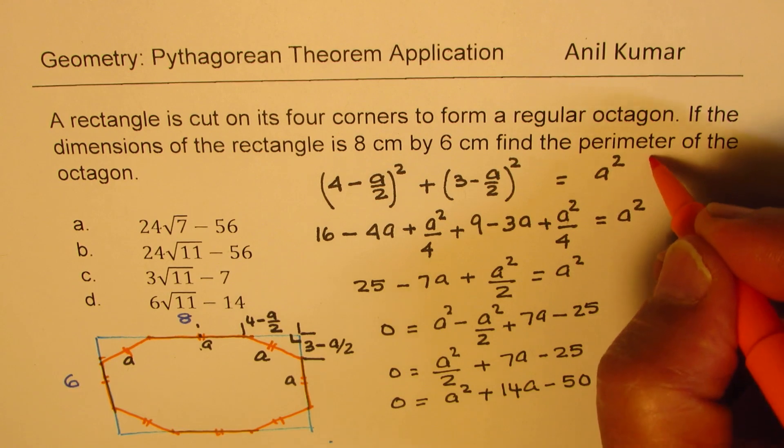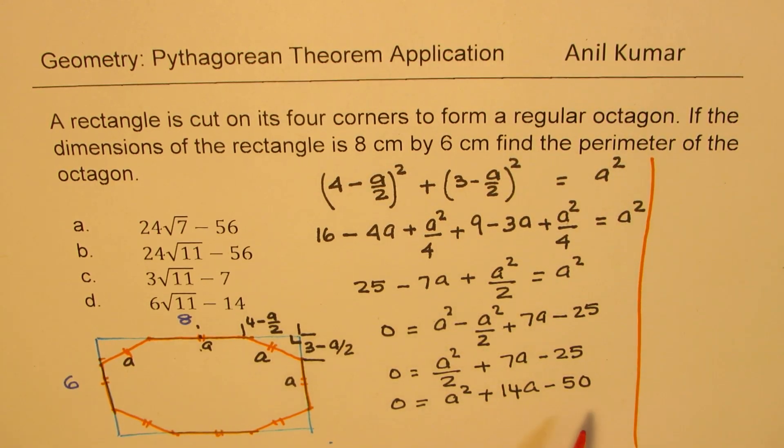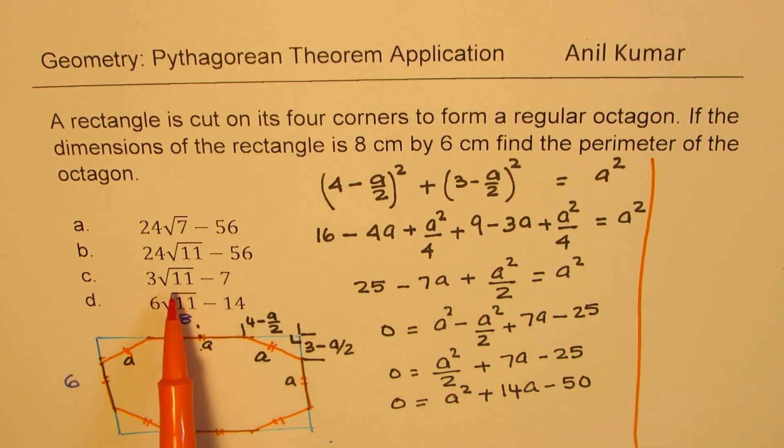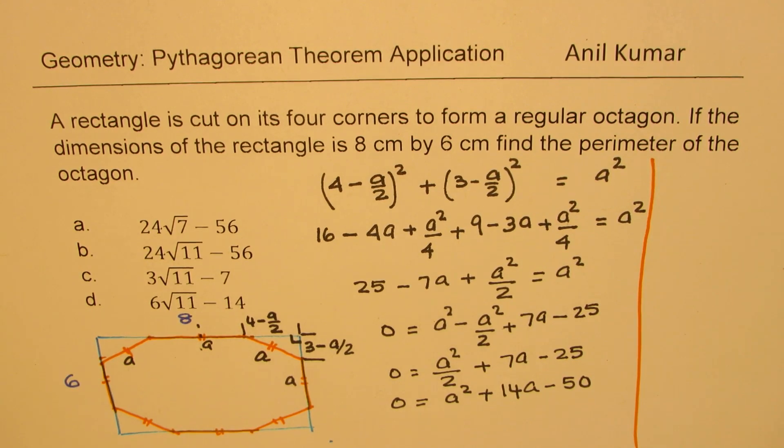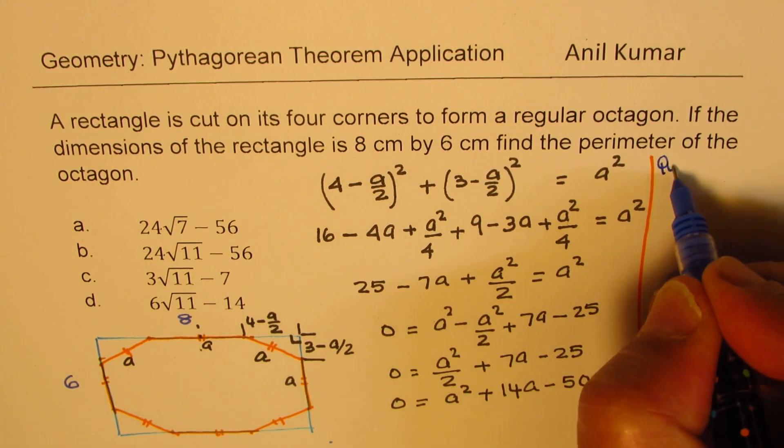So this is the equation which you need to solve. It's a quadratic equation. Now clearly, we have square root of 11 or square root of 7 in the options. That means it cannot be factored so easily. So we'll use the quadratic formula to find the value of A.